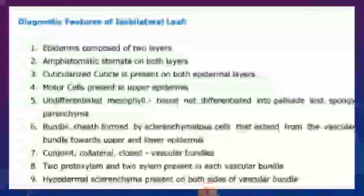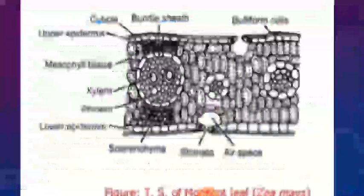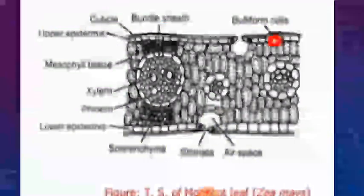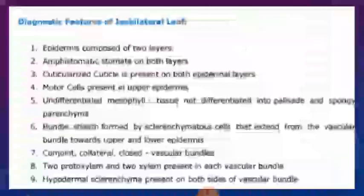Another feature is that motor cells, also called bulliform cells, are present in the upper epidermis. These are large or big cells present on the upper side of the epidermis. Such cells are known as bulliform cells.